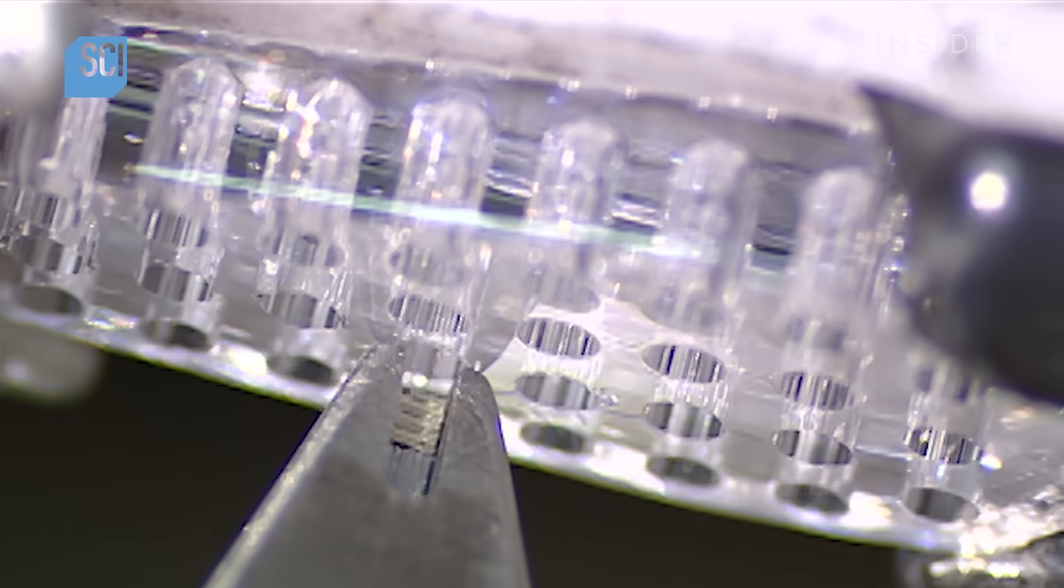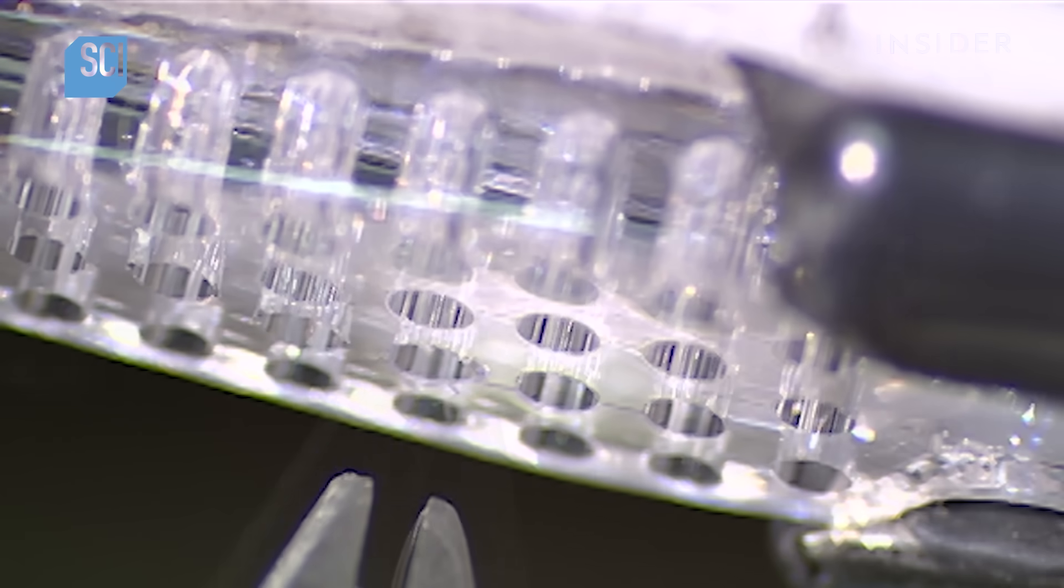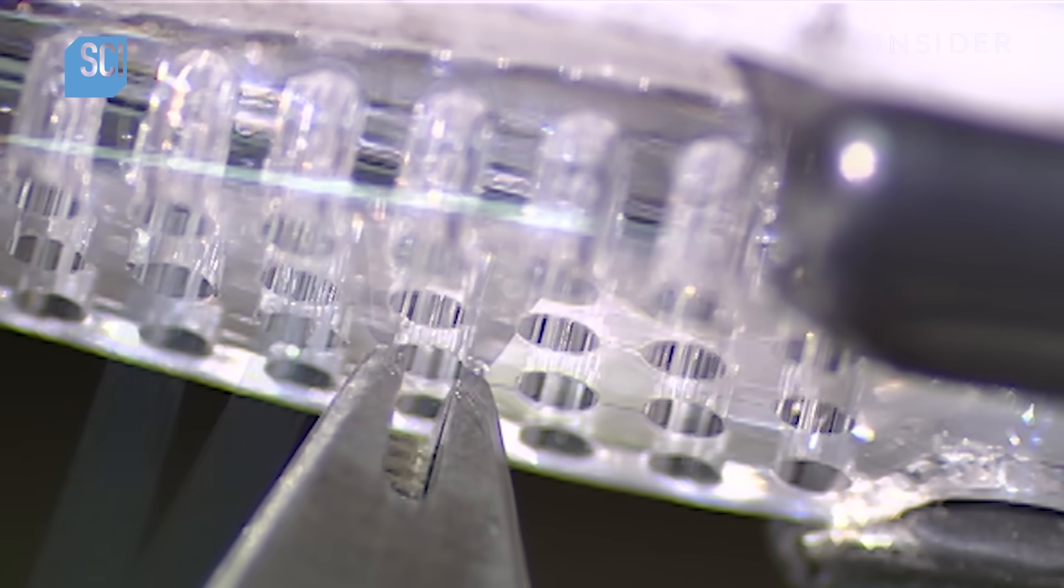Wondering what holds the bristles in place? Wire. The machine bends the fibers in half, anchoring them to the brush with wire in the middle.